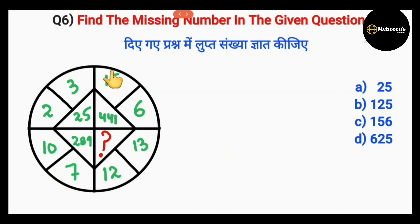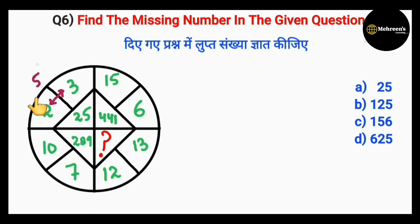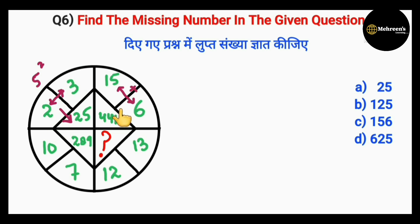Sixth question — here is the figure, missing number is here, and these are the options. There are two numbers: 3 and 2. If we do 3 plus 2, that equals 5, and the square of 5 is 25, which is the number shown here. Now for the next pair: 15 plus 6 equals 21, and 21 squared equals 441, which is that number.